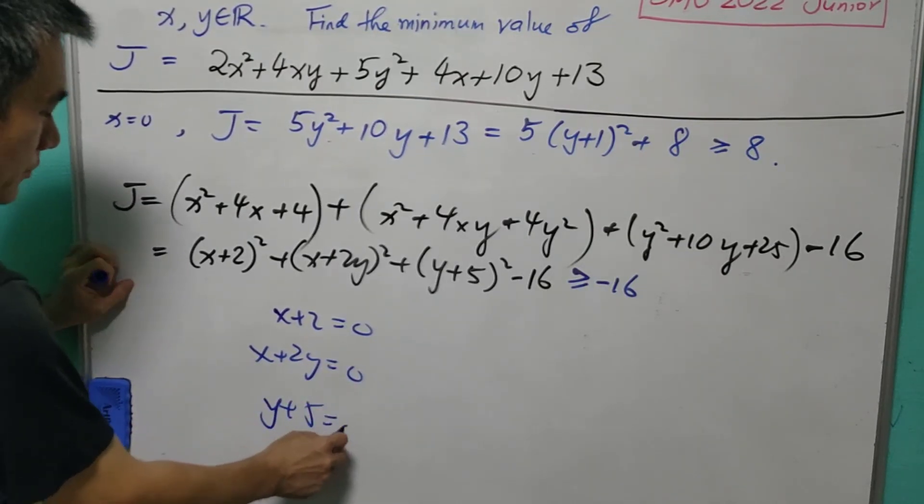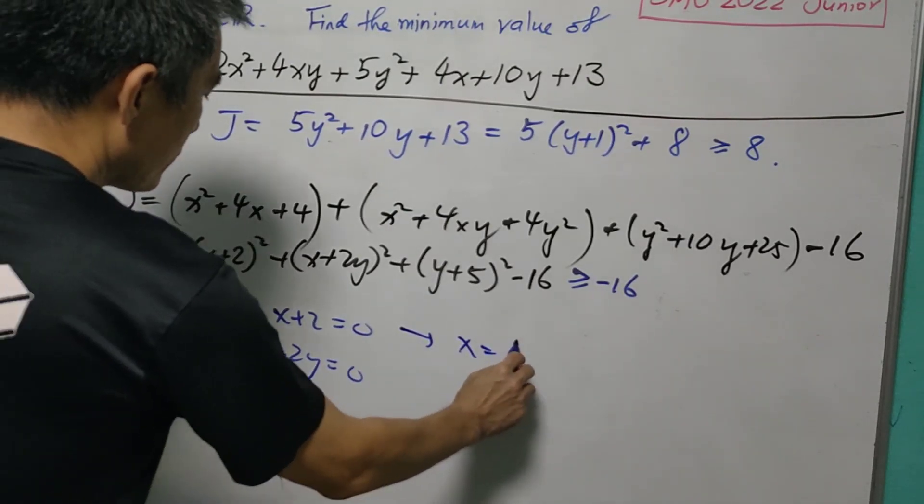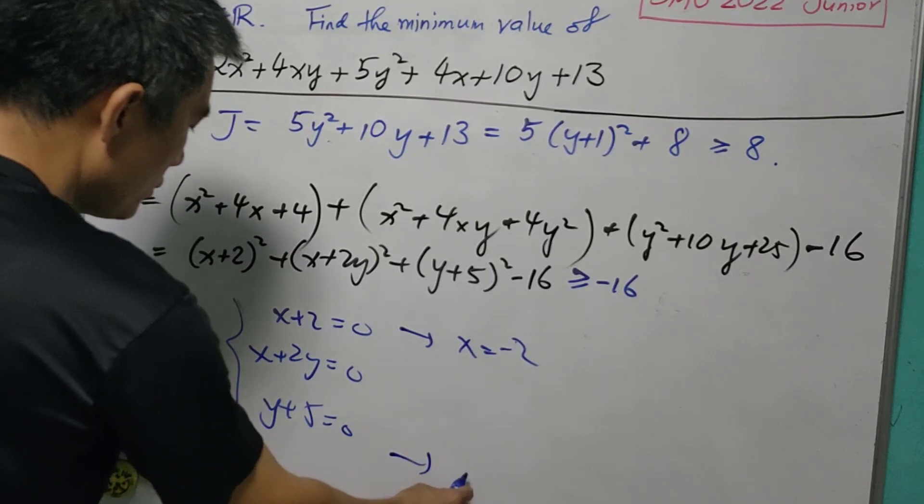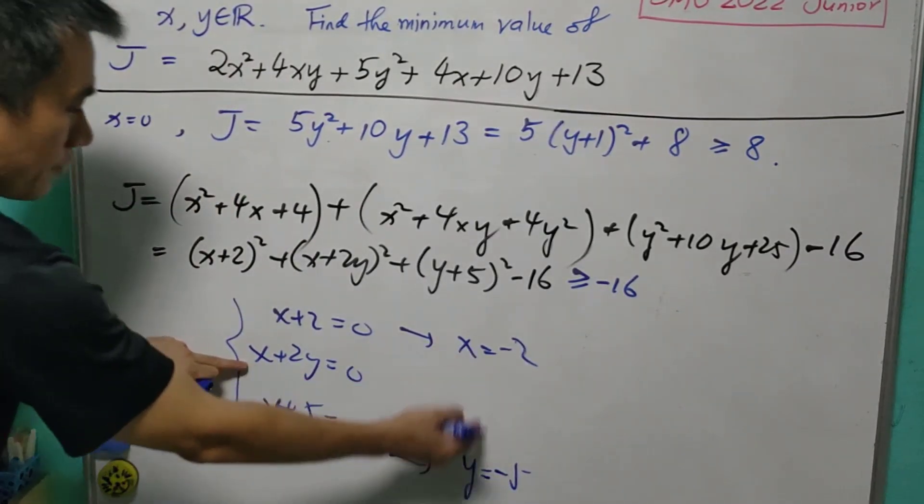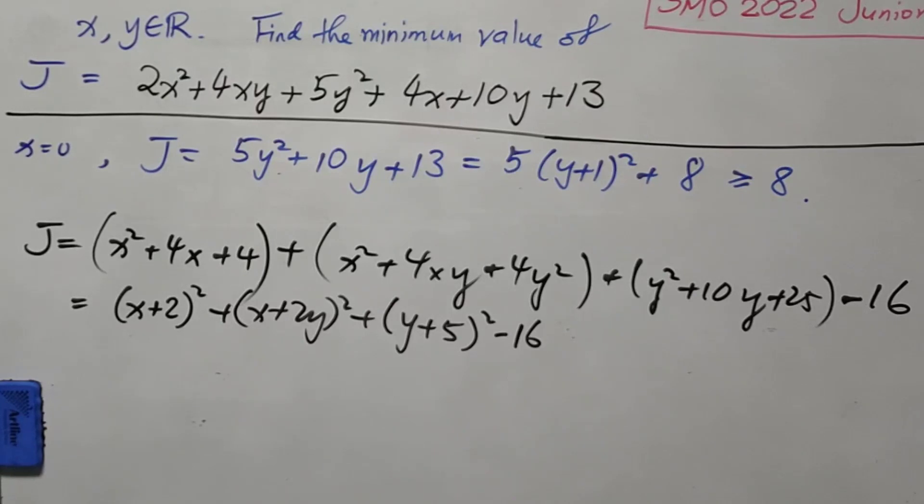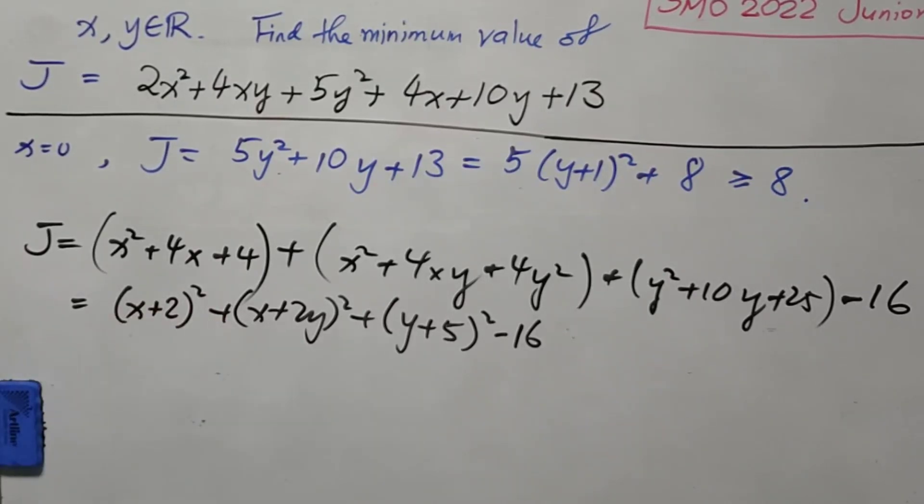y plus 5 has to be equal to zero. And we know that this is not going to be happened because the first condition means that x equals negative 2, the third condition means that y equals negative 5, and with this x and y, it cannot fulfill the second condition. Therefore, we need to use other method to get the minimum value of J.